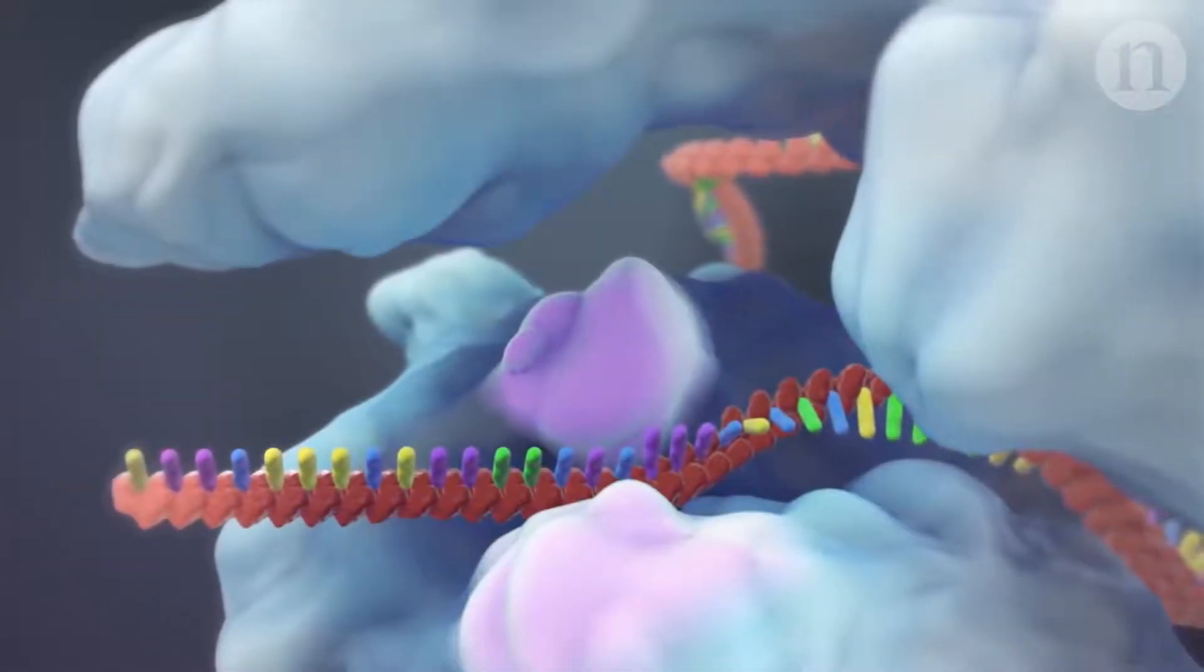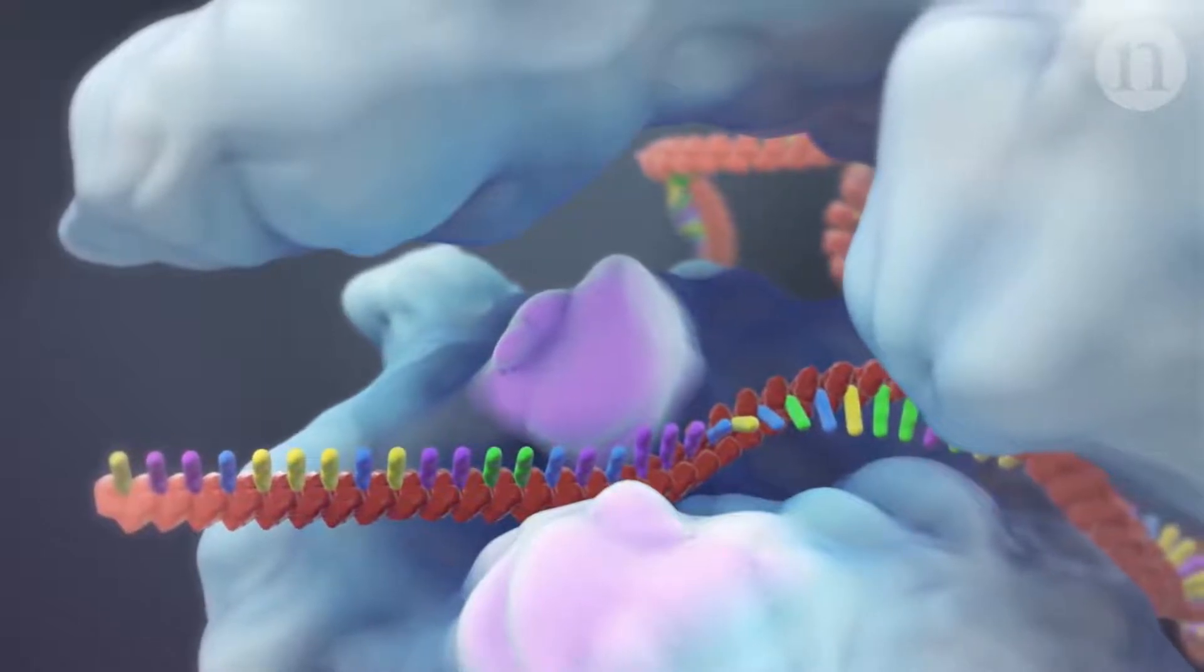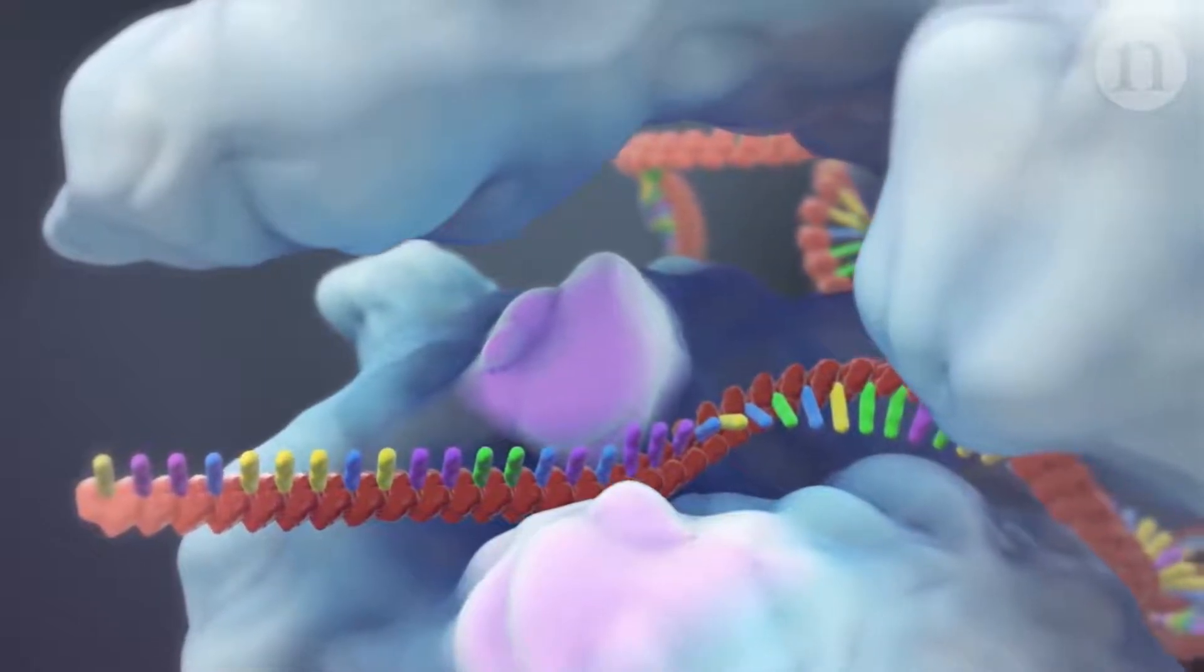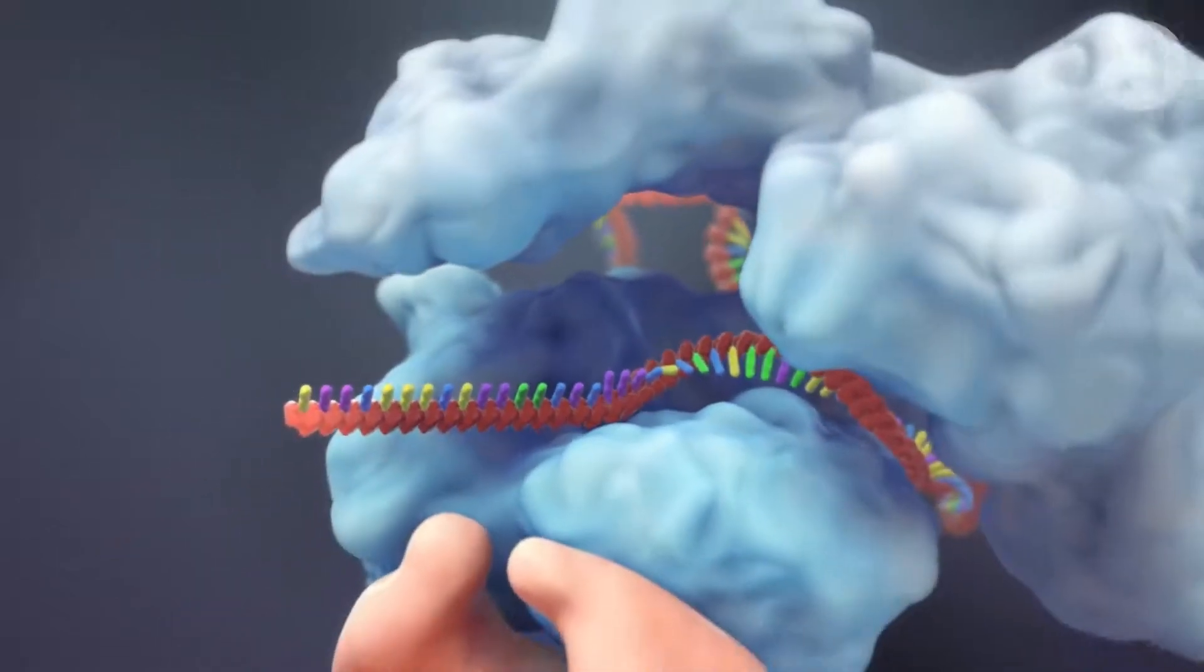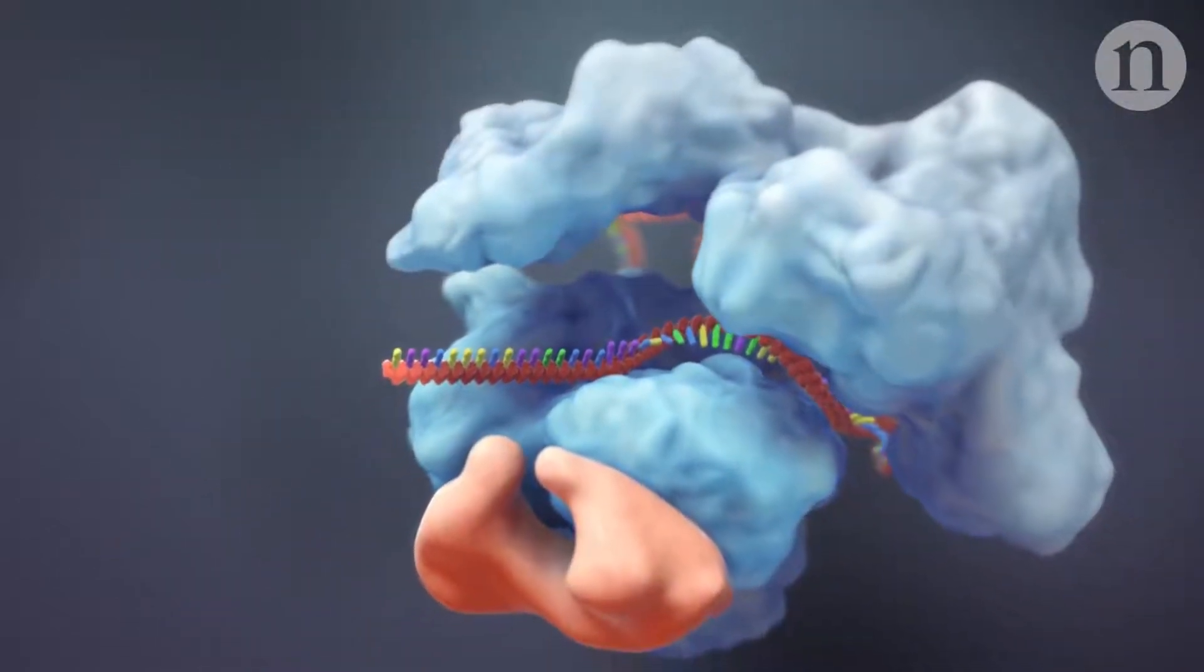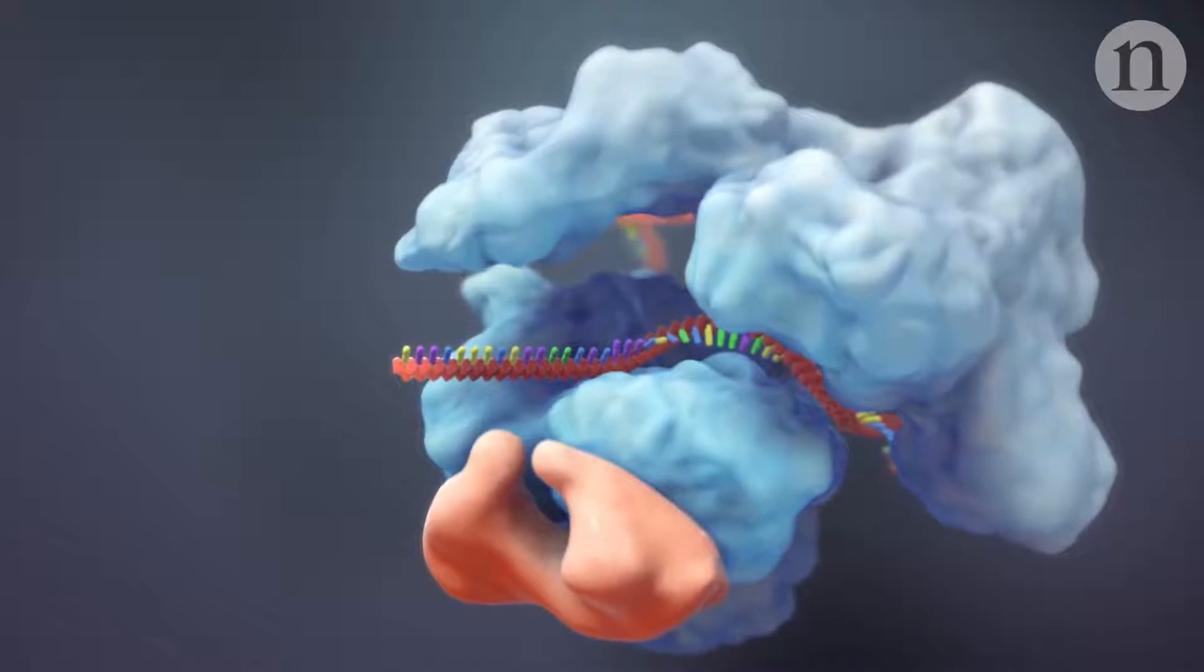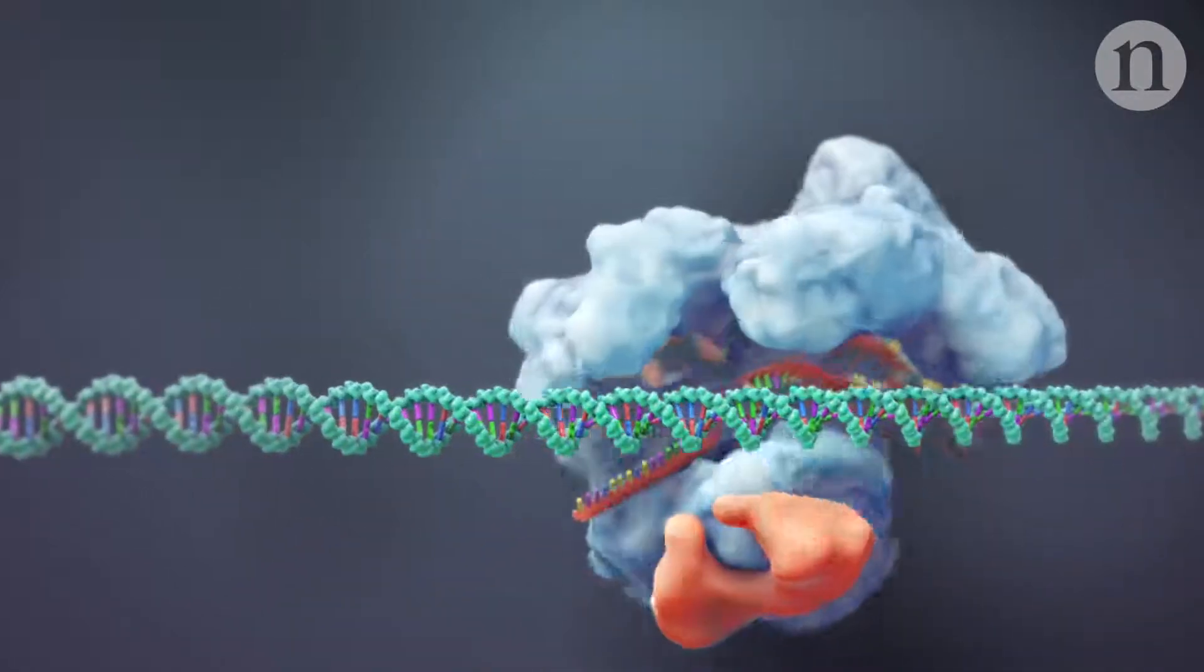But making double strand breaks isn't all CRISPR can do. Some researchers are deactivating one or both of Cas9's cutting domains and fusing new enzymes onto the protein. Cas9 can then be used to transport those enzymes to a specific DNA sequence.